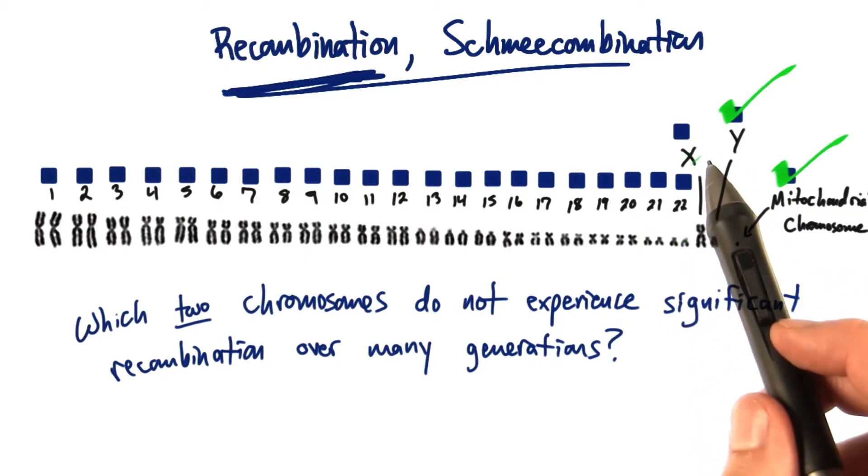Remember, when you have two X's in an individual, plenty of crossing over goes on between those X's.